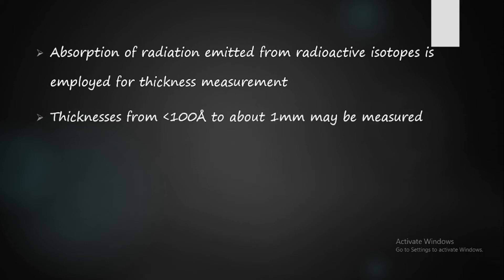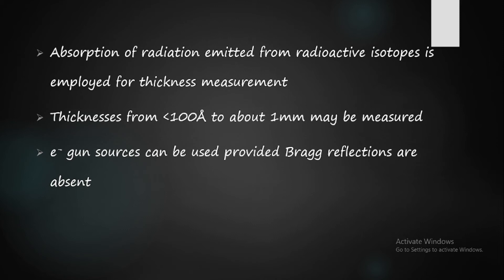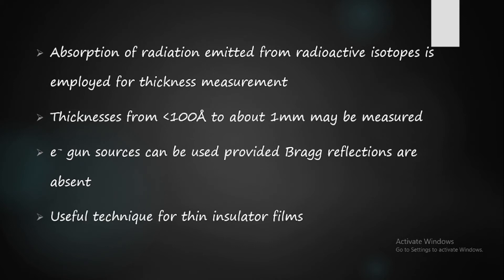Thicknesses from less than 100 angstroms to about 1 millimeter may be measured using alpha ray and beta ray absorption. Electron gun sources can also be used to provide fast electrons for absorption studies, provided that Bragg reflections are absent — meaning the material should not have any preferred orientation, as Bragg reflection causes discontinuity in energy levels. Such measurements can be performed inside an electron microscope. The maximum thickness is limited to several thousand angstroms for 100 keV electrons, and this method is useful for finding the thickness of thin insulator films.